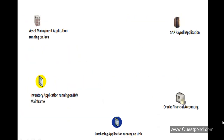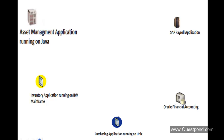Let's forget BizTalk for some time and enter into a world in which we do business. An oil and gas company, practically a very huge organization, has several applications that support their business. One of the applications is an Asset Management application which runs on Java. This application manages the asset data of this organization. As this is an oil and gas company, there are machineries which generate oil and gas. As these machineries are owned by the company, these are the assets for this organization.